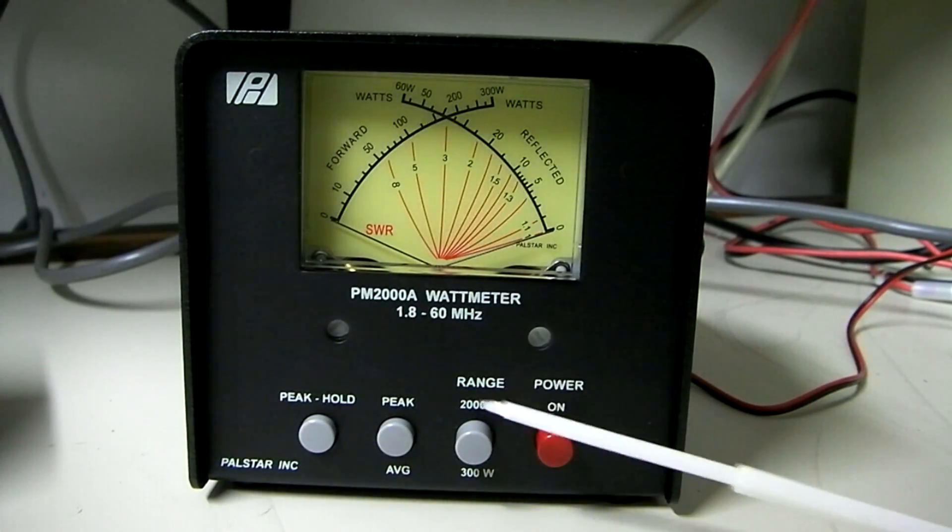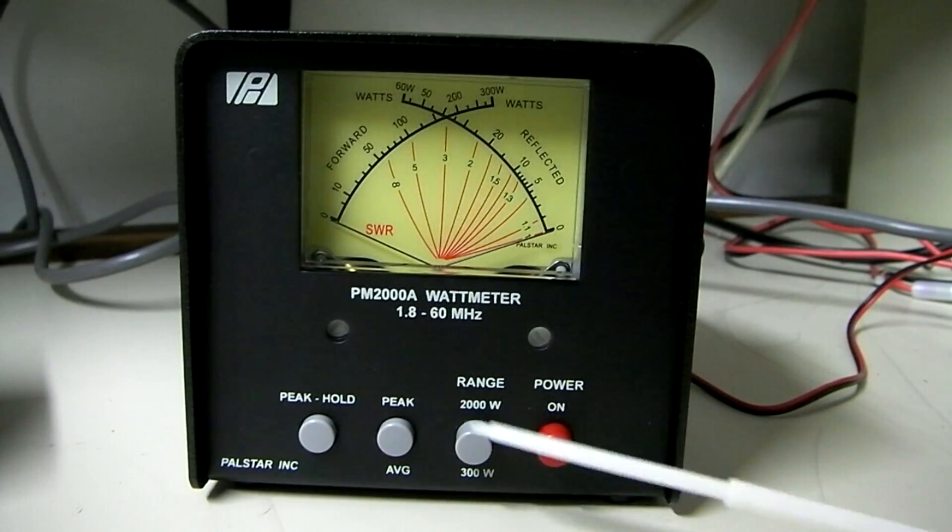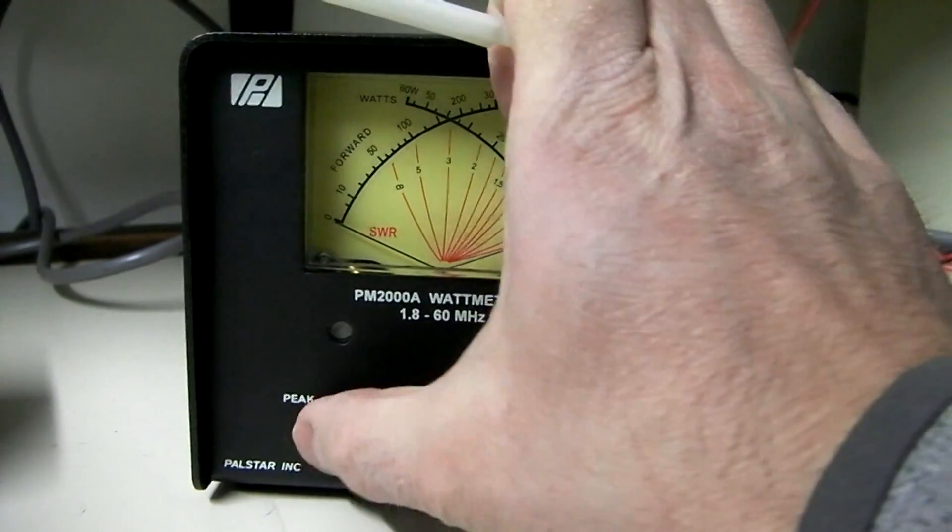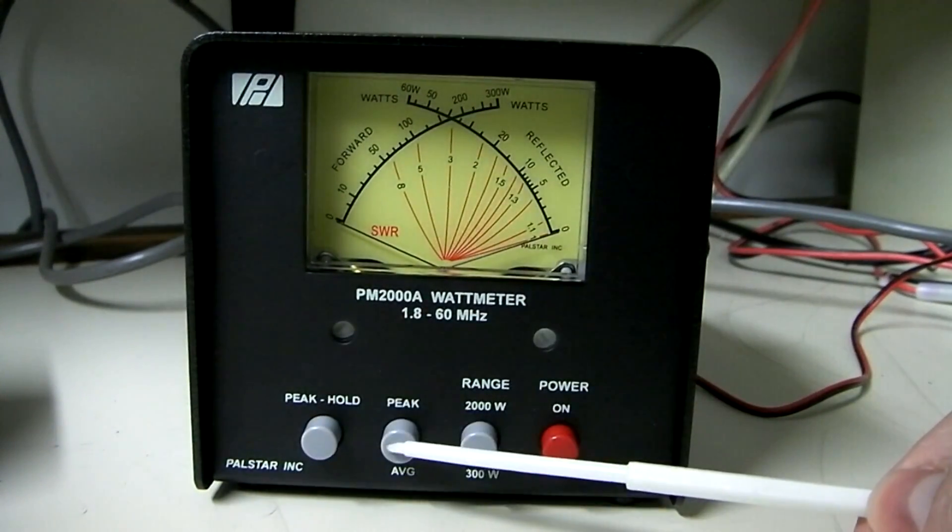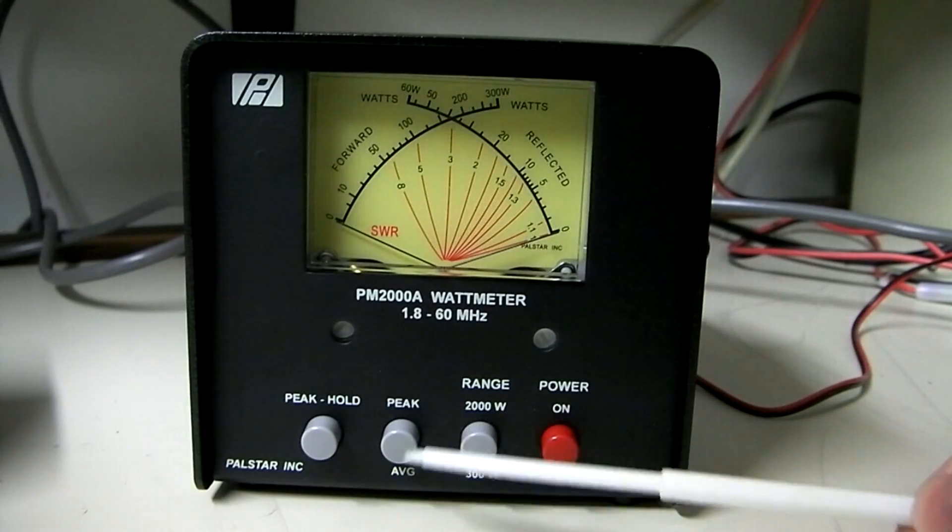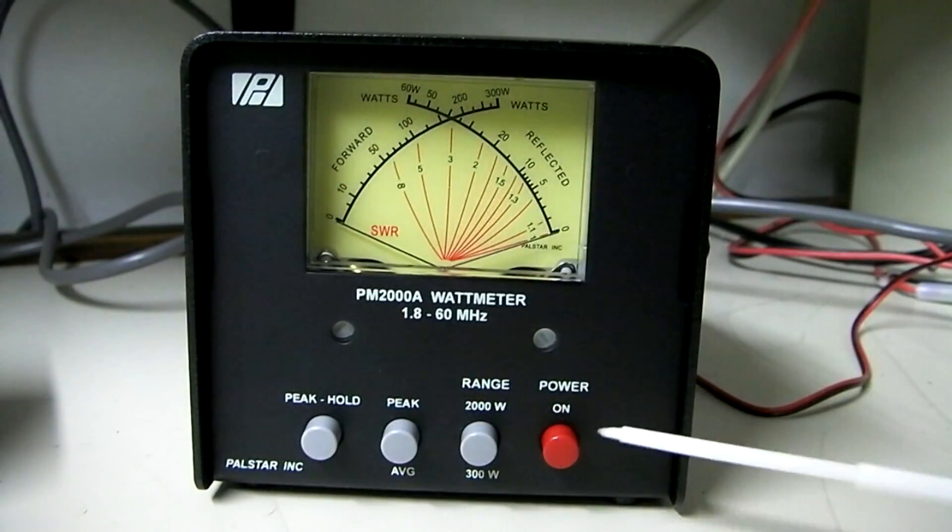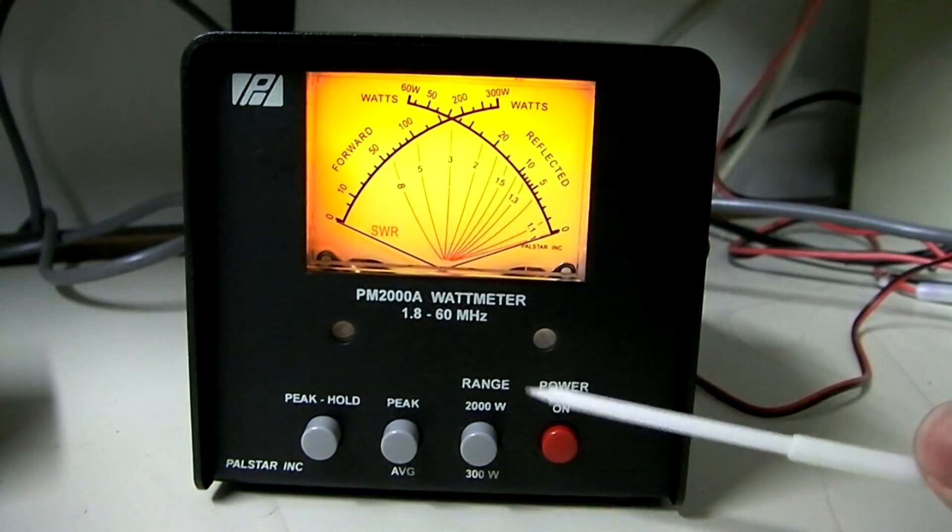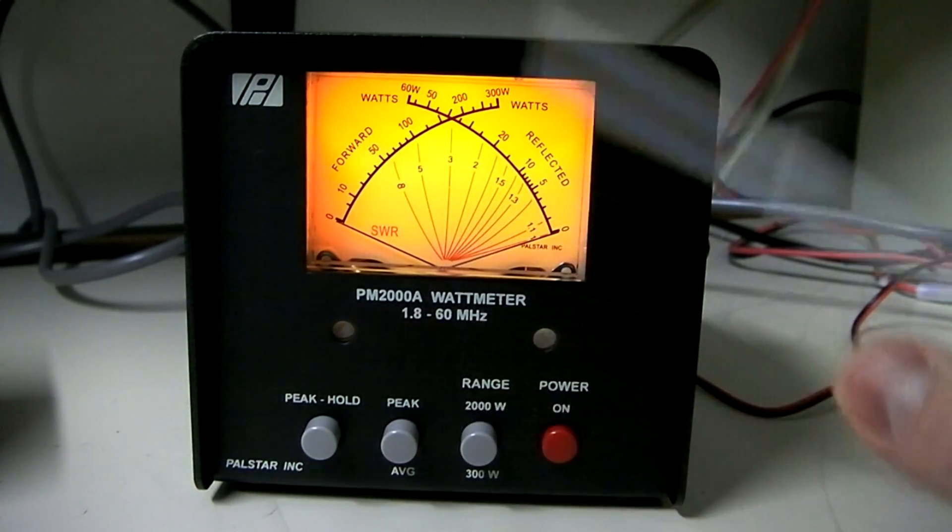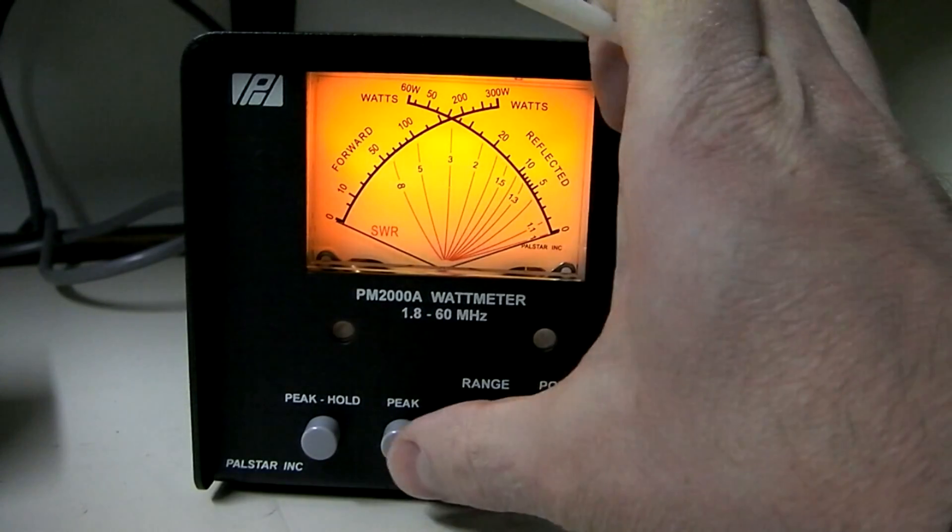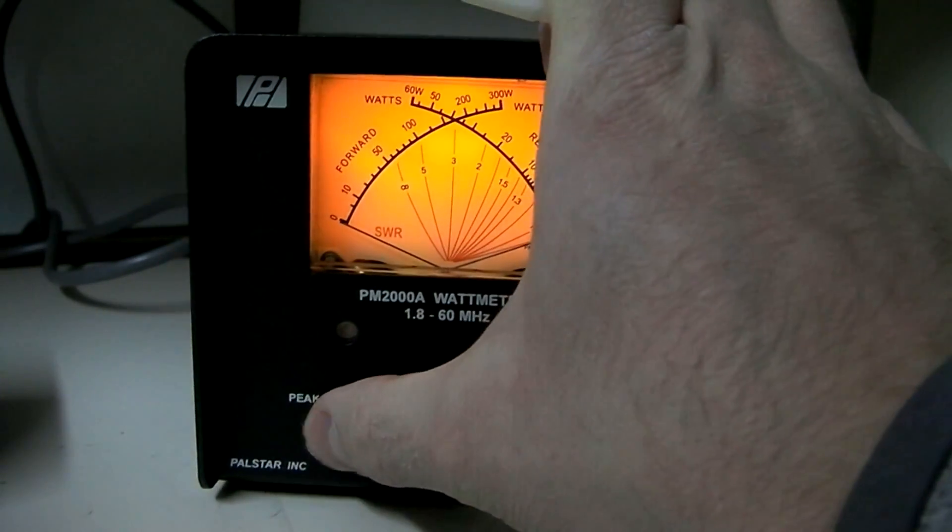One thing that I don't like about the meter right away compared to the other one is it doesn't tell you, on the buttons, when they're in or out, which one's which. I mean, we can assume that when it's in the out position, on-off, so on would be in. So, we can assume that 2,000 watt scale would be in. Peak reading, in. Peak hold, in.